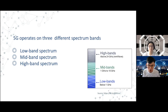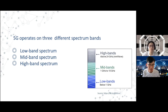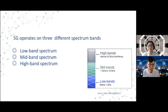You may have noticed this with home Wi-Fi — with 2.4 GHz and 5 GHz bands, the signal you receive weakens the further you are from the router. As for the mid band spectrum, it provides faster speeds and lower latency than low band, though it does not penetrate buildings as effectively. Expect speeds up to 1 Gbps on a mid band spectrum.